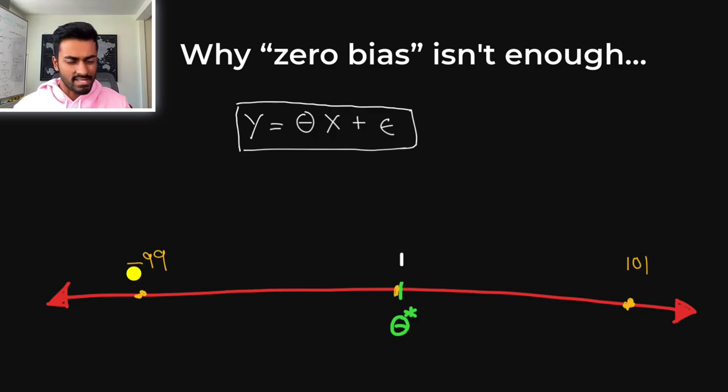But despite the zero bias, even if we take any one of these 1000 models that we train and we take the value of theta, that value of theta is so wrong that the model is just actually very bad, despite having a zero bias. And so we need more than just bias here.